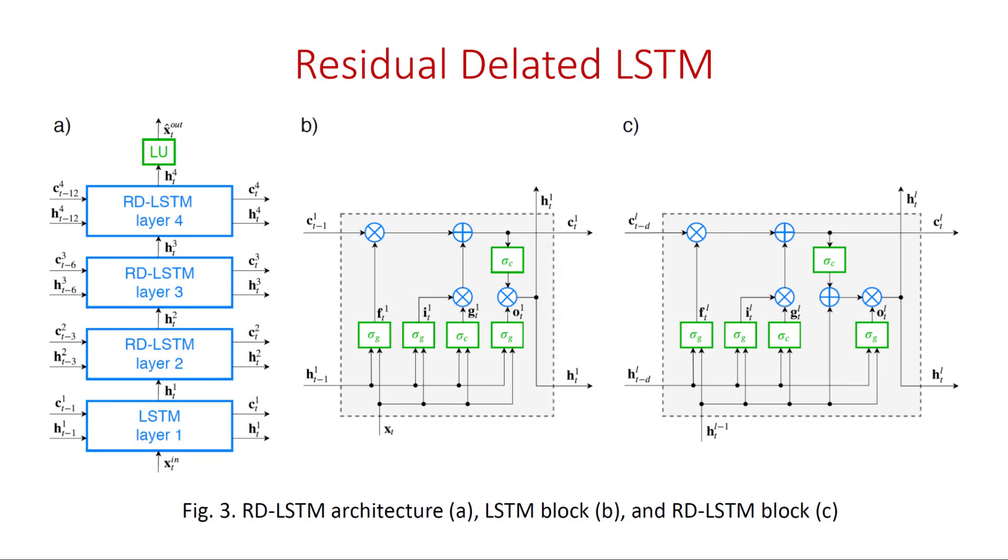The RDLSTM architecture used in the studies shown in figure 3a. It is composed of four recurrent layers and a linear unit LU. The first layer consists of the standard LSTM block shown in figure 3b. The subsequent three layers consists of RDLSTM blocks that is blocks equipped with delayed recurrent skip connections and a special shortcut path from lower layers. The shortcut paths are used to allow gradients to flow through a network directly without passing through non-linear activation functions.